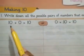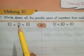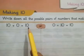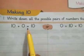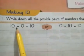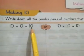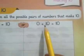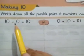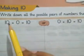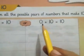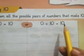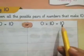We write pairs of numbers that, when added together, make 10. The first has been done for us: 10 plus 0 equals 10, or 0 plus 10 equals 10. It means if we write 10 plus 0, it will make 10, and if we write 0 plus 10, it will also make 10.